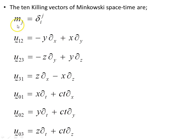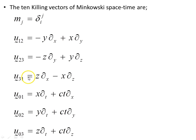So the 10 killing vectors of Minkowski spacetime are the four basis vectors (the everyday translations), and these six rotations: three spatial rotations and three Lorentz boosts in the x, y, and z-directions, giving us 10 killing vectors in total.